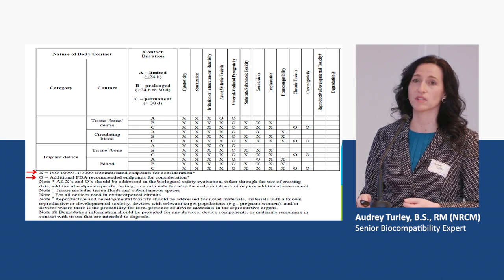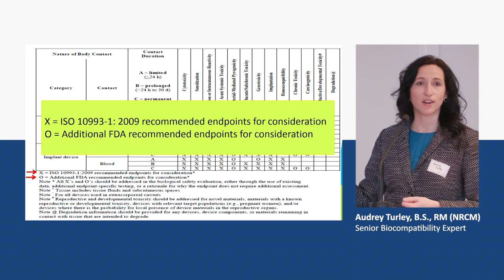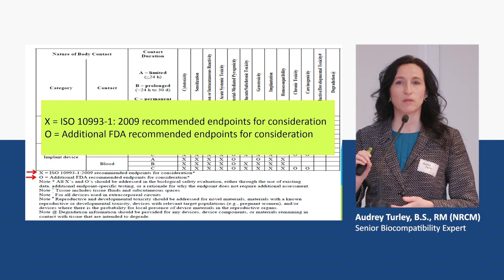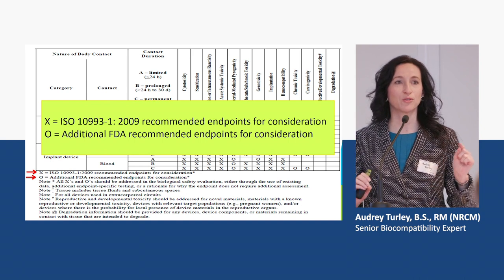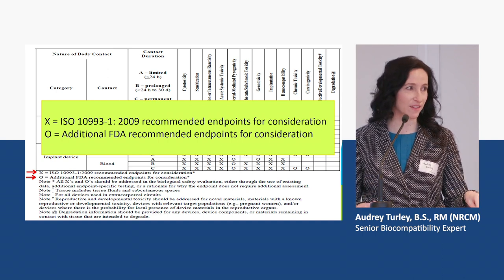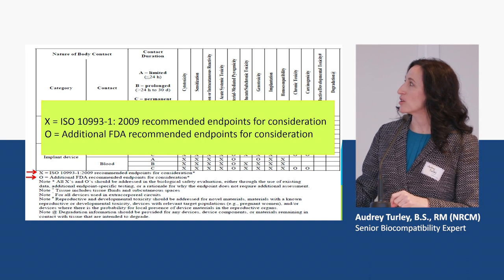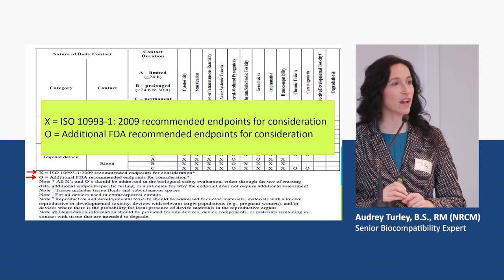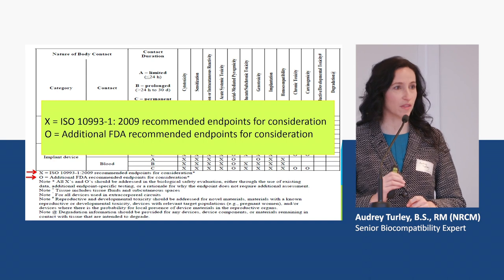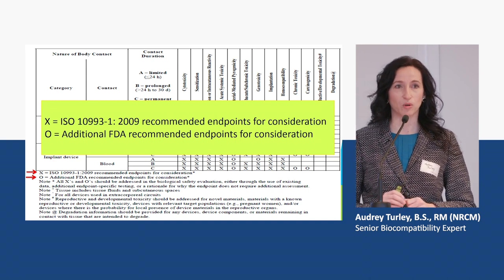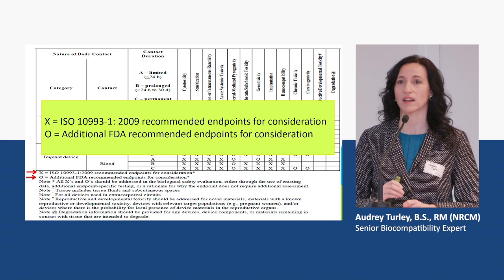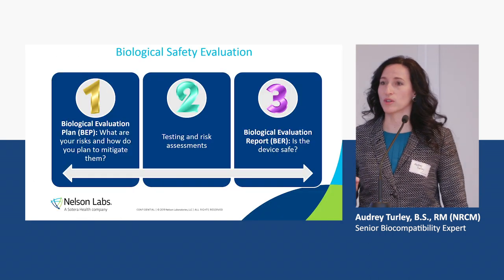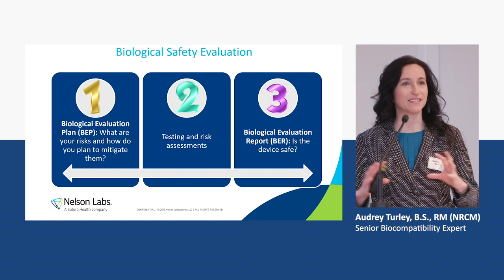This is the second half of the FDA table. Their X's represent recommended endpoints for consideration, matching ISO 10993-1 2009 version, and the O's are additional FDA-recommended endpoints. I want to stress the word 'consideration' — the FDA is not asking you to run out and do all this testing. They want you to think about it and decide if it's appropriate for the risk of the device, based on how it's manufactured and how it contacts the patient.